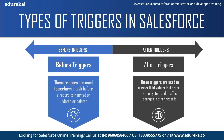After triggers are used to access field values that are already set by the system, such as a record's ID, date, or phone number field, and to affect changes in other records as well. These triggers are usually used to update or validate record values after they are saved to the database. Also, after triggers are read-only — you cannot make any changes to them.